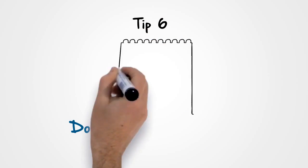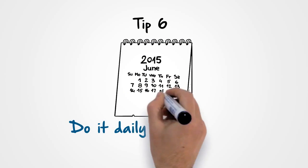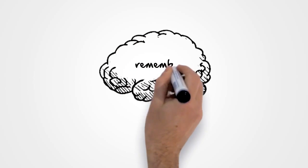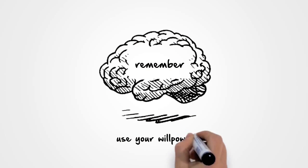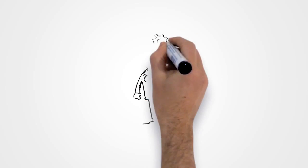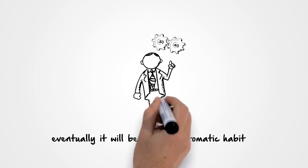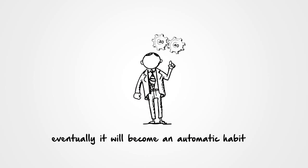Tip 6: Do it daily for a month. At first, you'll need to consciously remember to do the habit and use your willpower. But by staying disciplined for 30 to 40 days, eventually it will become an automatic habit that you won't even have to think about anymore.